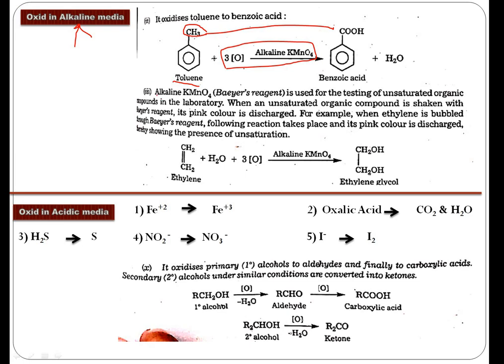Another important aspect is that it's also called Bayer's reagent. KMnO4, potassium permanganate under alkaline condition, is called Bayer's reagent. It is used for testing unsaturated compounds in the laboratory. When an unsaturated organic compound is shaken with Bayer's reagent, pink color is discharged. This discharging of pink color is an indication that your sample contains unsaturated compound. For example, if you have ethylene, CH2=CH2, if you treat this with alkaline KMnO4, the pink color gets discharged. It is discharged due to formation of ethylene glycol and that oxidation is carried out by alkaline KMnO4. So these are the important reactions in the alkaline medium.